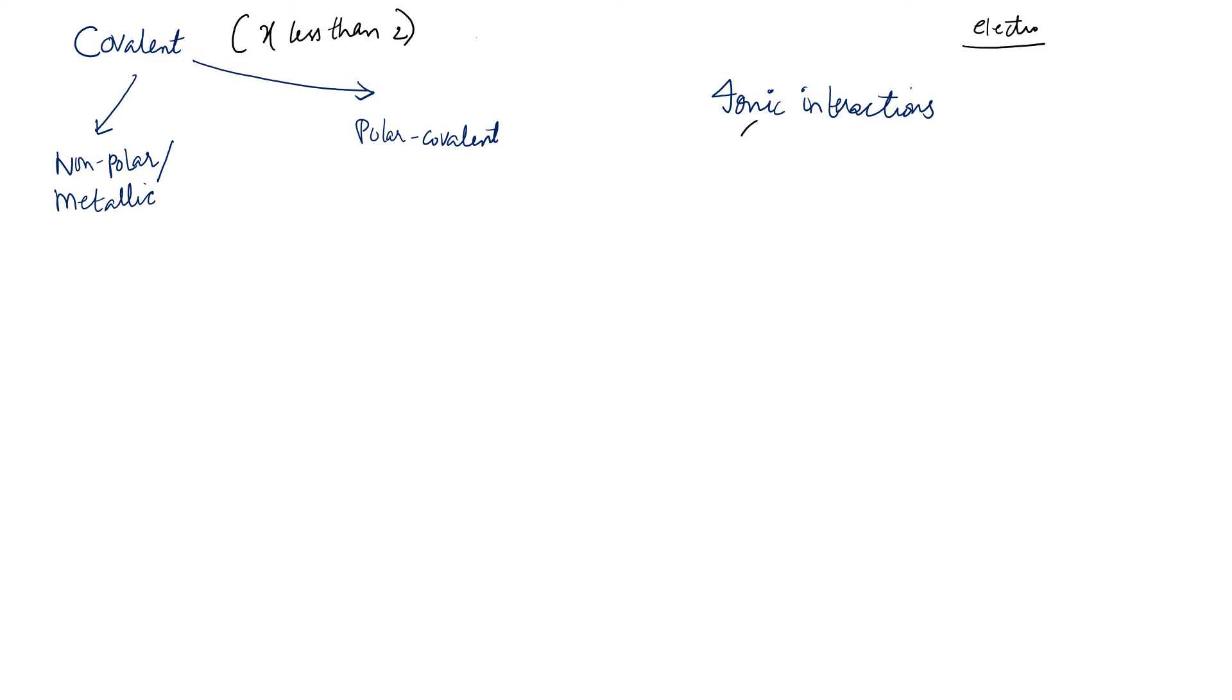So now we have looked upon the electronegativities in the previous slide. So let's just consider the covalent bond: in covalent bond the electronegativity difference (Δ) should be less than 2, and in ionic interactions the electronegativity difference should be greater than 2.